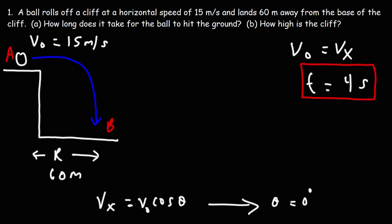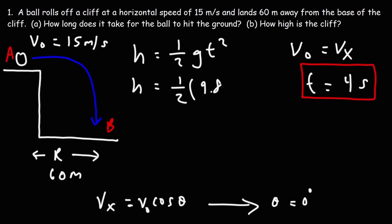Now part B: how high is the cliff? If we know the time it takes to hit the ground, we can use this formula to calculate the height of the cliff: h equals one half g t squared. So g is 9.8, t is 4, 4 squared is 16, half of that is 8, and 8 times 9.8 gives us a height of 78.4 meters.